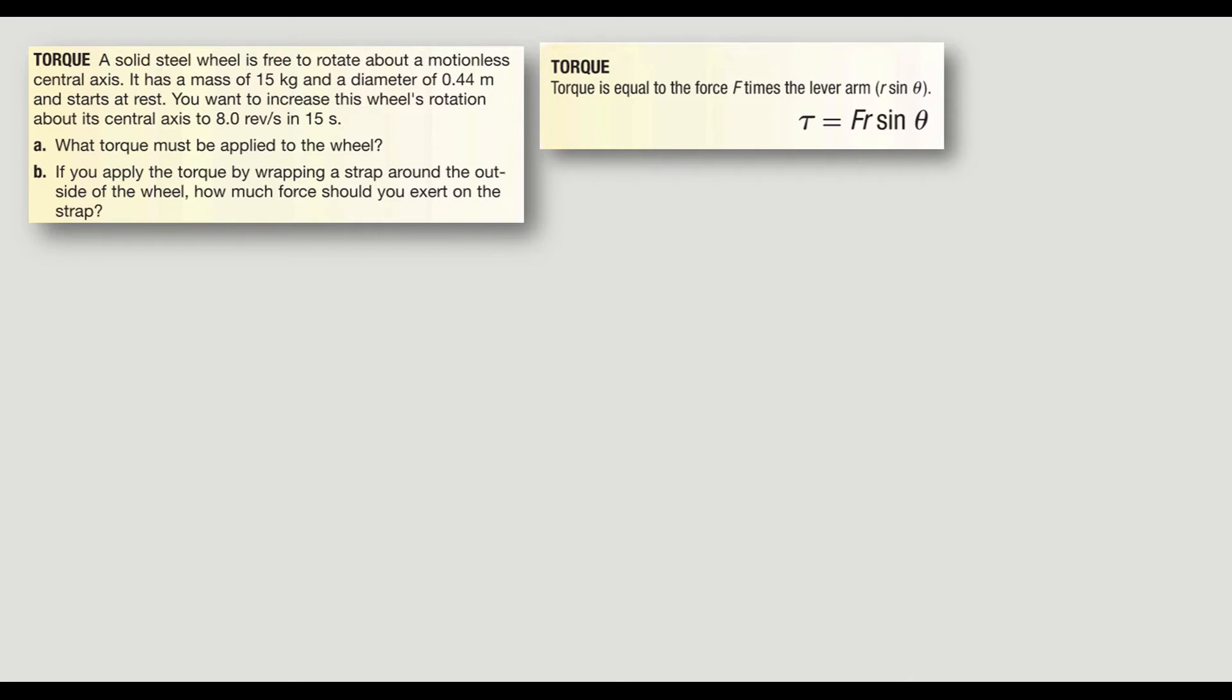Here we go. We got our problem. I included the torque formula in case we have forgotten it as well. We have a solid steel wheel is free to rotate about a motionless central axis. Steel wheel. Here's our axis. Draw it out. Always draw your diagrams. So it's a wheel. I'm trying to give it a little three dimensions there. It has a mass of 15 kilograms.